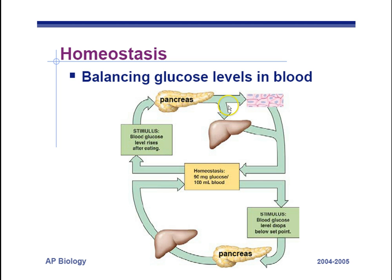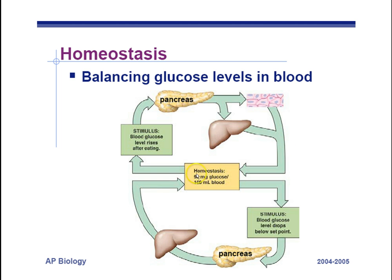Insulin opens up protein channels in our cells in order for the cells to take up sugar so they can do cell respiration. That's going to lower our blood sugar to maintain sugar homeostasis. We're reversing a trend — sugar levels are going up, and this is lowering the blood sugar by taking the sugar out of the blood. So that's called negative feedback.